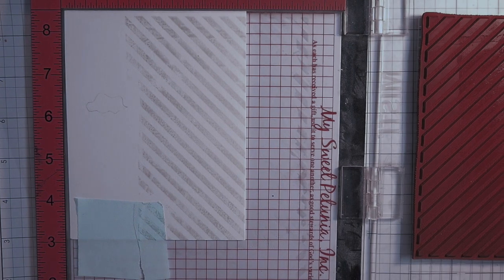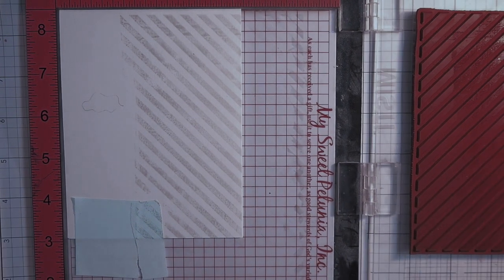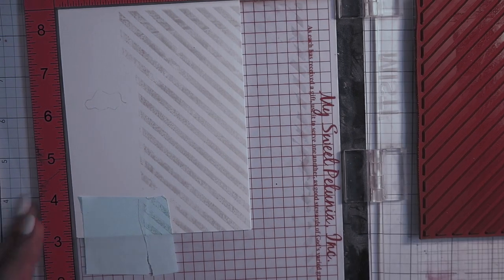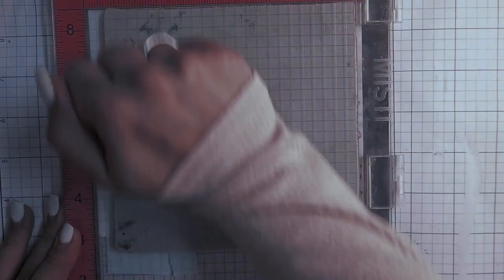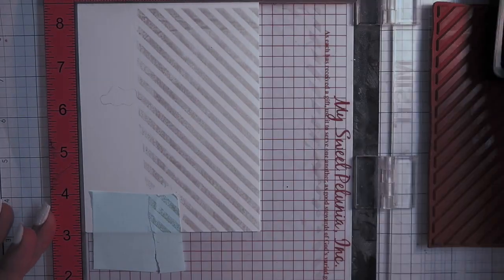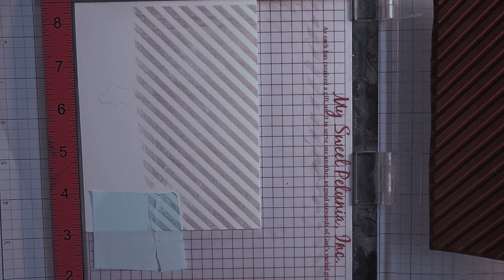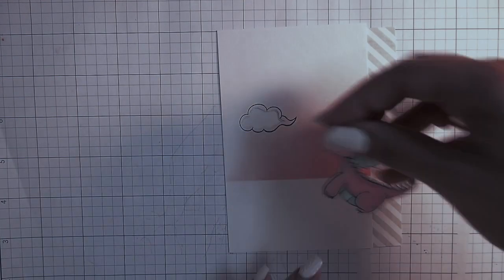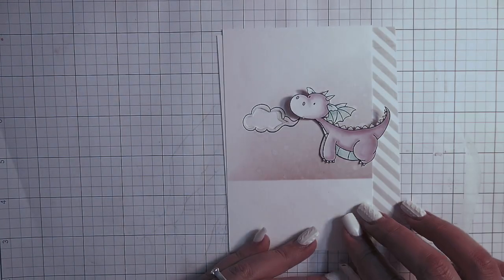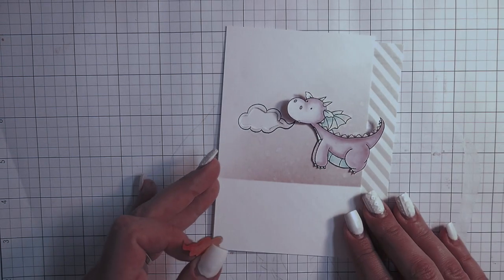Now as I told you, I'm stamping the gray stripes. I'm using here My Favorite Things background stamp and some Simon Says Stamp Fog ink. I'm stamping it three or four times to get a really good crisp impression. And now you can see how it will look like.